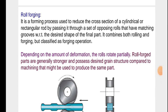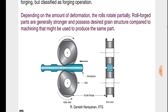Welcome back friends. We are now studying the subject manufacturing process, specifically the part on forging. In forging, we will see roll forging — it is a forming process used to reduce the cross section of a cylindrical or rectangular rod by passing it through a set of opposing rolls that have matching grooves with respect to the desired shape of the final part. It combines both rolling and forging but is classified as a forging operation. Depending on the amount of deformation, the rolls rotate partially.